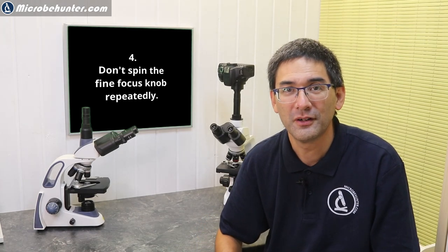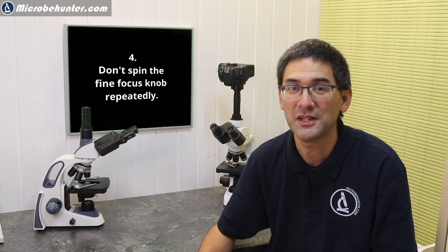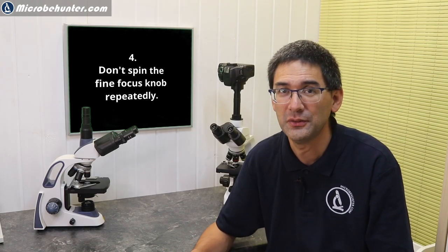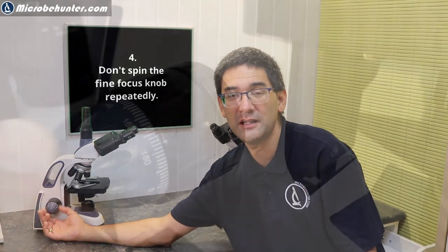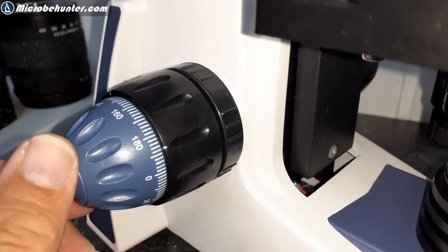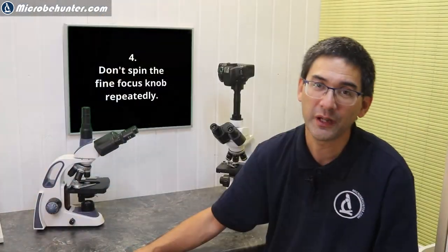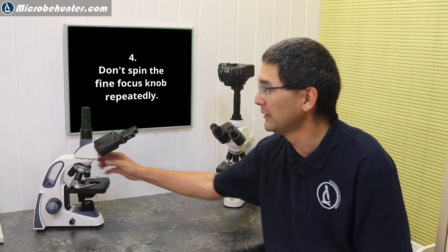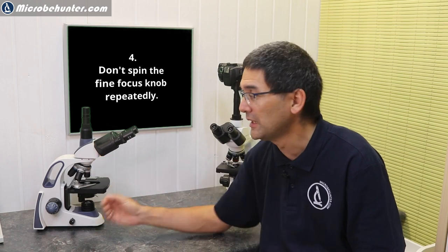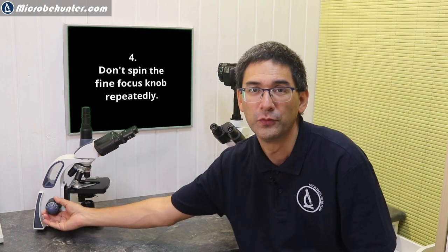Problem number four is another focusing problem: sometimes beginners lose focus and try to regain it by quickly spinning the fine focus knob 10, 15, 20 times in each direction. Don't do that. If you lose focus, simply rotate the low power 4x objective into position and use the coarse focus knob. That's much faster.